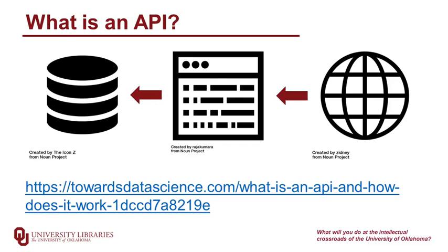First, what is an API? API stands for Application Programming Interface. It is a translator between two computers. In this case, one computer is yours, in your code, and the other computer is an external computer containing data that you need.